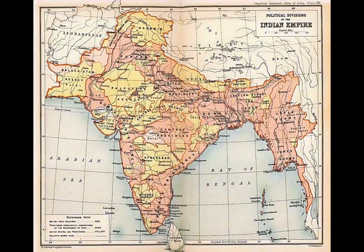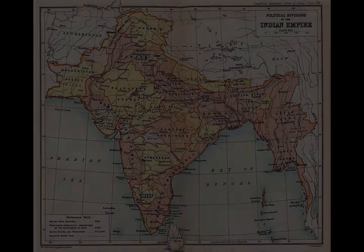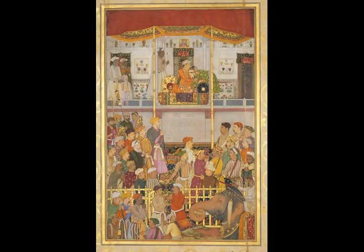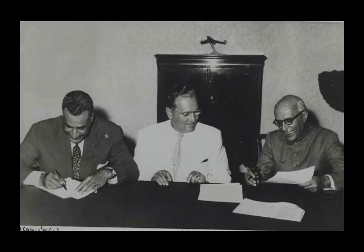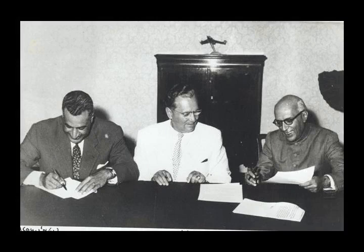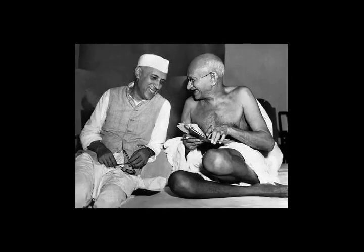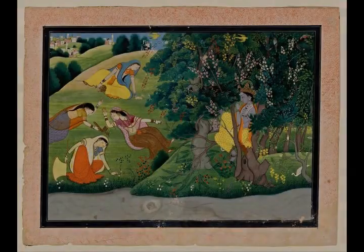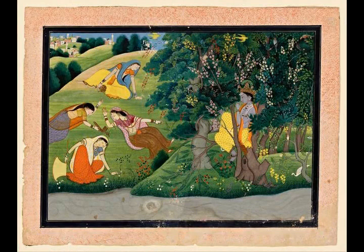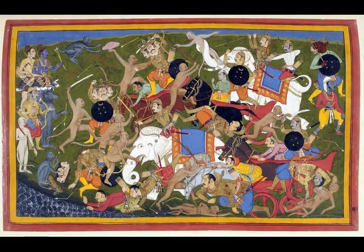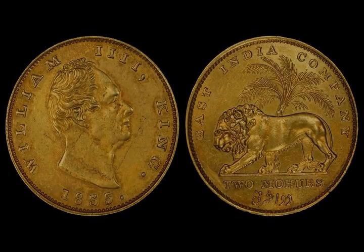In the 1950s, India strongly supported decolonisation in Africa and Asia and played a leading role in the non-aligned movement. After initially cordial relations with neighbouring China, India went to war with China in 1962, and was widely thought to have been humiliated. India has had tense relations with neighbouring Pakistan. The two nations have gone to war four times: in 1947, 1965, 1971, and 1999. Three of these wars were fought over the disputed territory of Kashmir, while the fourth, the 1971 war, followed from India's support for the independence of Bangladesh. In the late 1980s, the Indian military twice intervened abroad, including a peacekeeping operation in Sri Lanka between 1987 and 1990, and an armed intervention to prevent a 1988 coup d'état attempt in the Maldives.